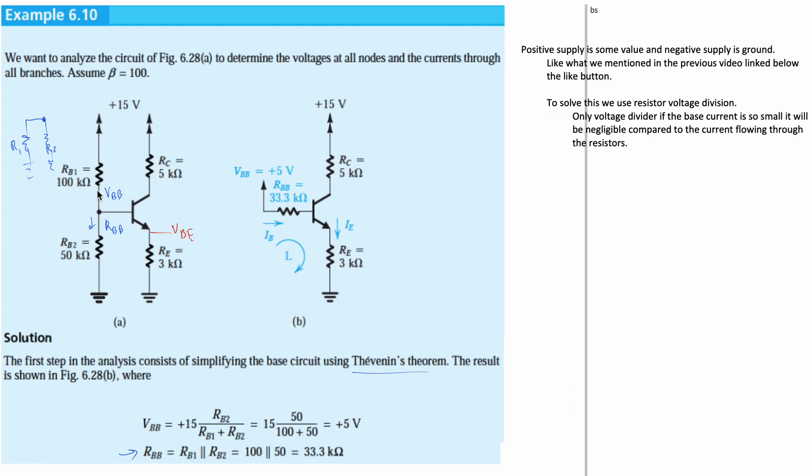Example 6.10 here. I've already filled out some of the notes, but we want to analyze the circuit that we're given here to determine the voltages at all nodes and the currents through all branches. We can assume that our beta is 100.